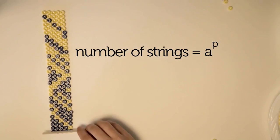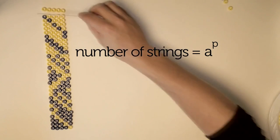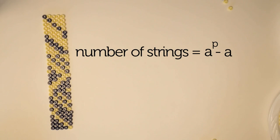And when he removed the monocolored strings, he subtracts exactly A strings, since there are one for each color. This leaves him with A to the power of P minus A strings.